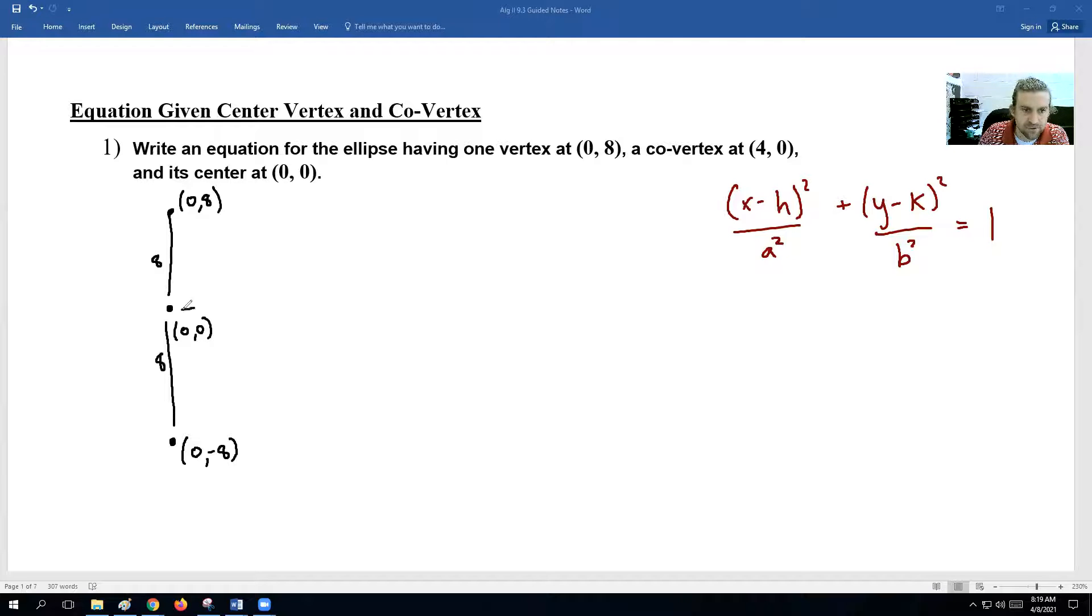Then the co-vertex is at (4, 0), so we can go over 4, up 0, and that means the opposite over here would be at (-4, 0). We have a 4 and a 4. So we end up making basically an ellipse like such.